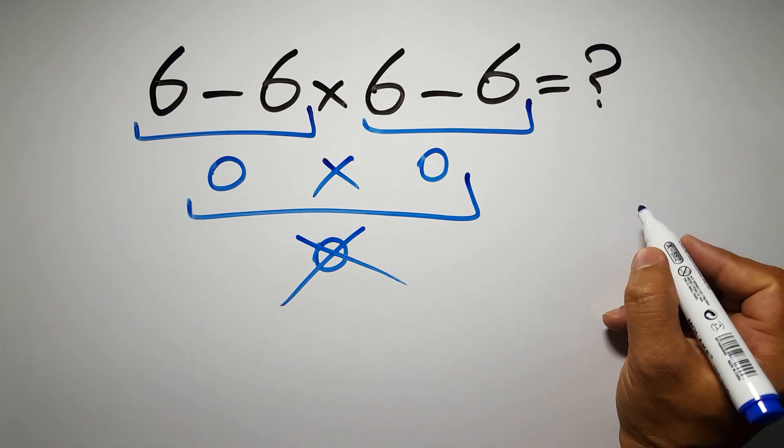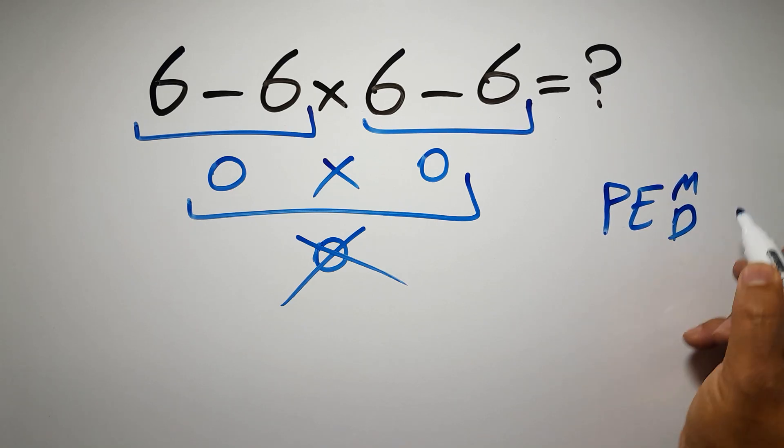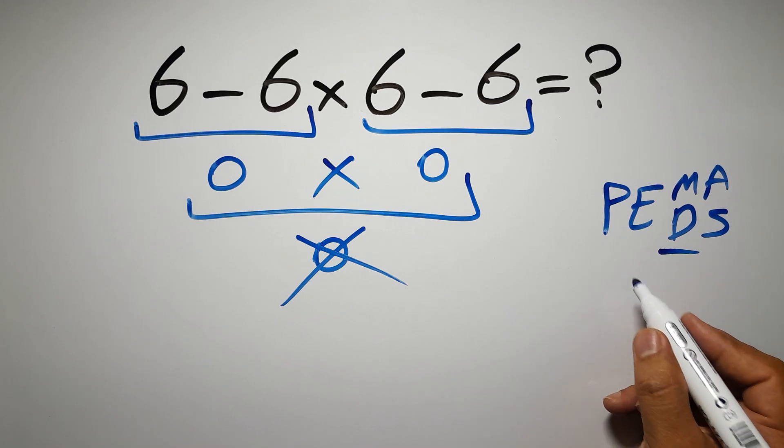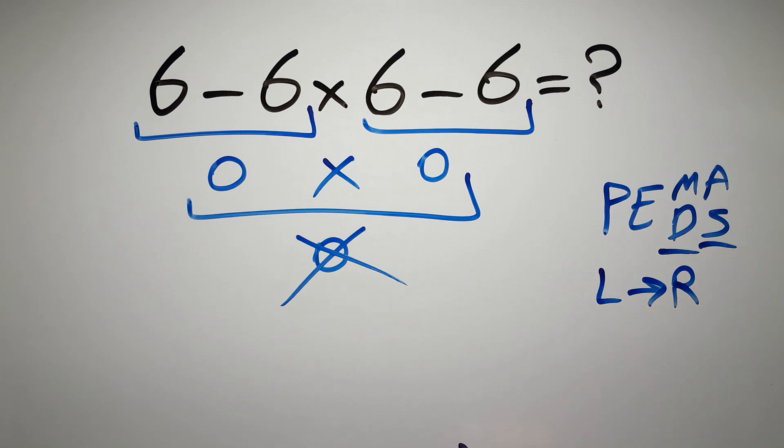According to the order of operations, first we have to do parentheses, then exponents, then multiplication or division, and finally addition or subtraction. Remember that multiplication and division have equal priority, and we have to work from left to right, and the same applies to addition and subtraction.